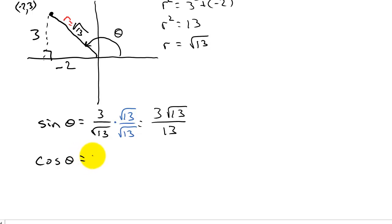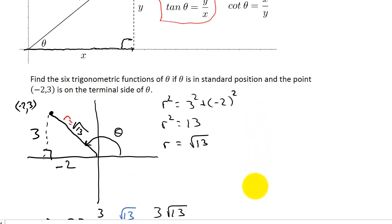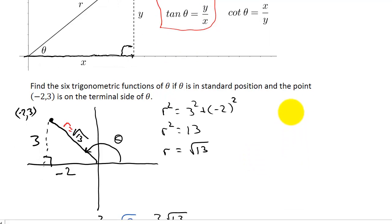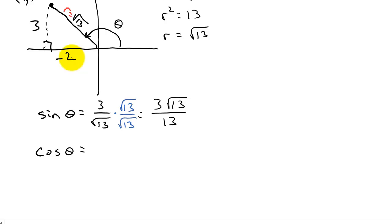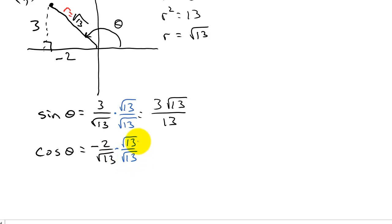Cosine theta is x over r, so that's -2 over √13. Rationalizing the denominator — multiply numerator and denominator by √13 over √13 — gives us -2√13 over 13. So cosine theta = -2√13/13.